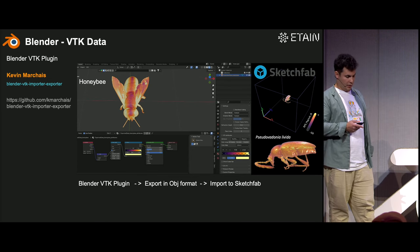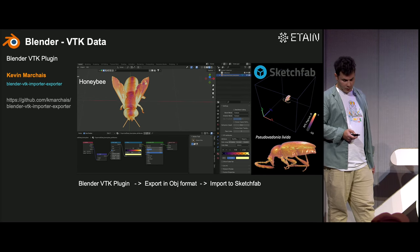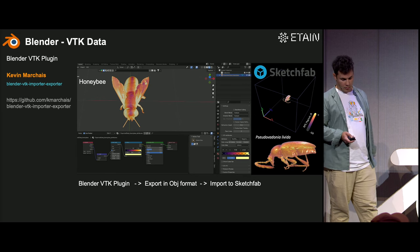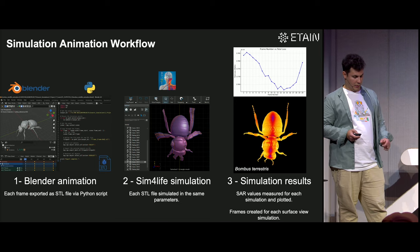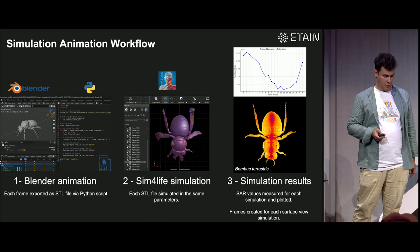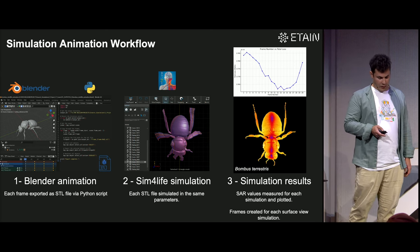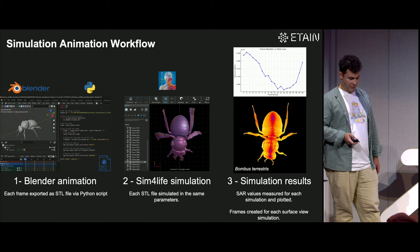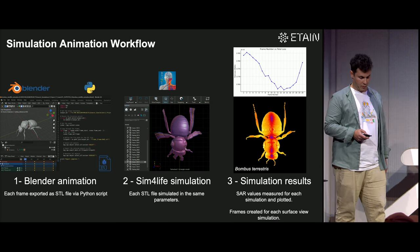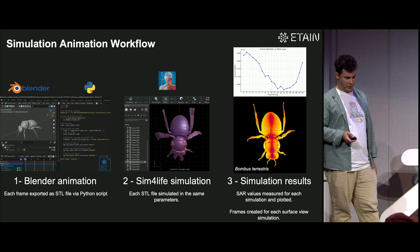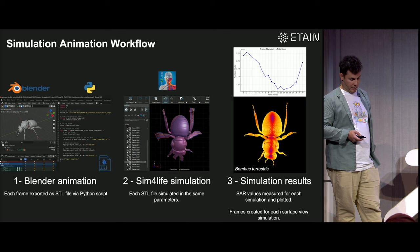I also used the VTK plugin to bring the surface model into Blender, with the idea of posting it to Sketchfab. Another workflow I've been developing: create an animation in Blender, use Python scripts to export each frame as an STL file, send those to the simulation software, simulate each frame, and produce a simulation animation. The plot shown is the Specific Absorption Rate (SAR), which changes as the insect moves. It would be interesting to check SAR during wing flapping or other behaviors using animation.